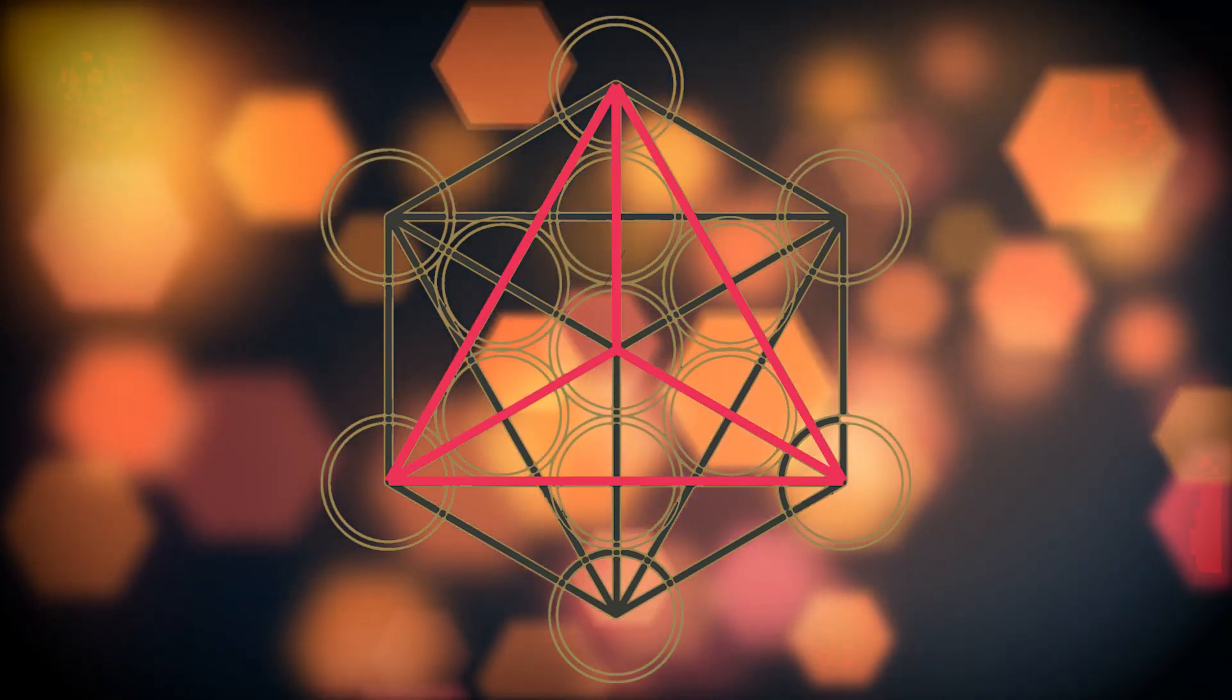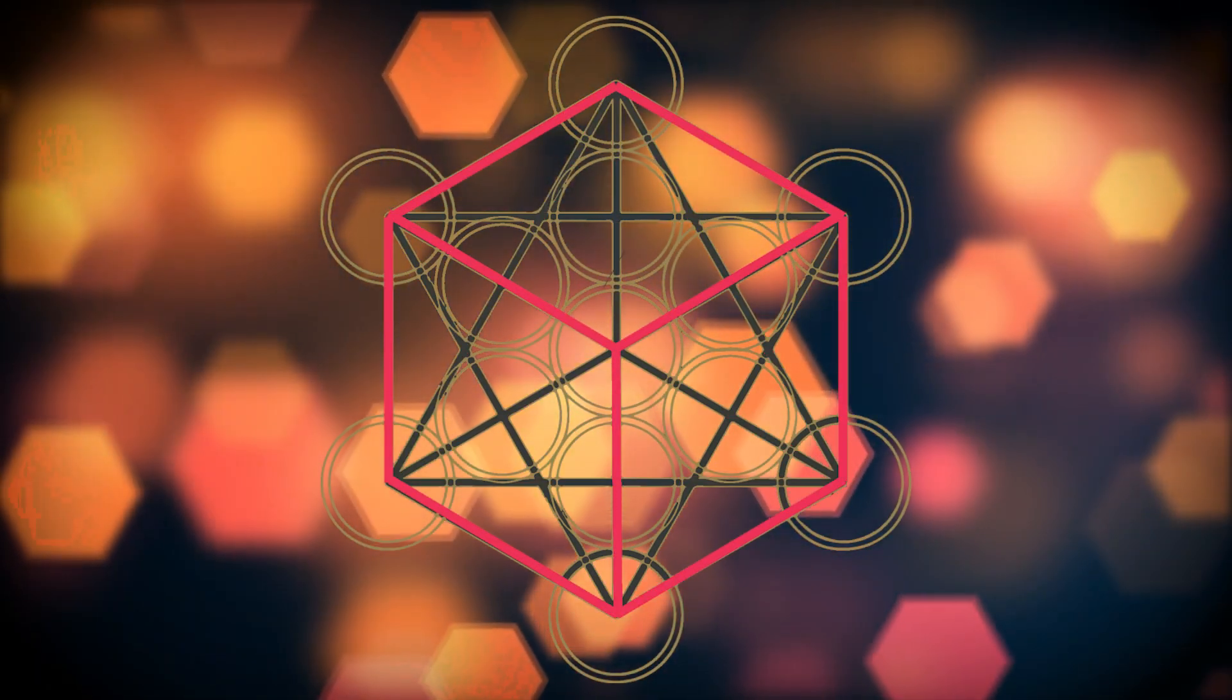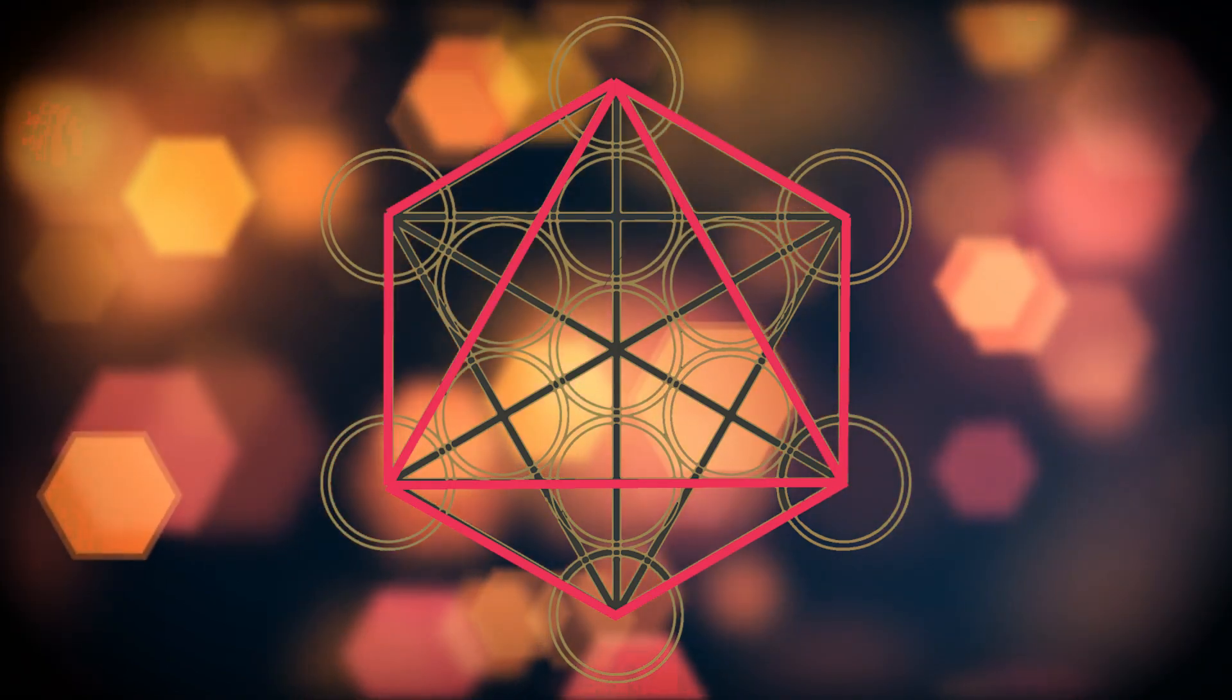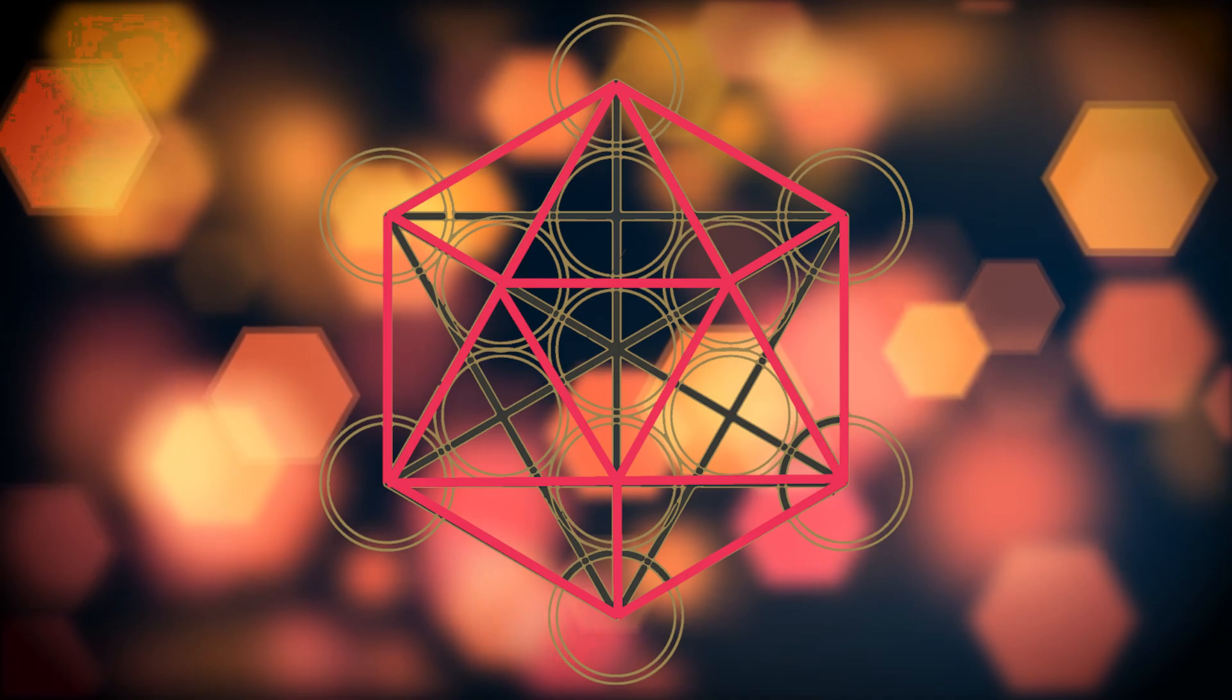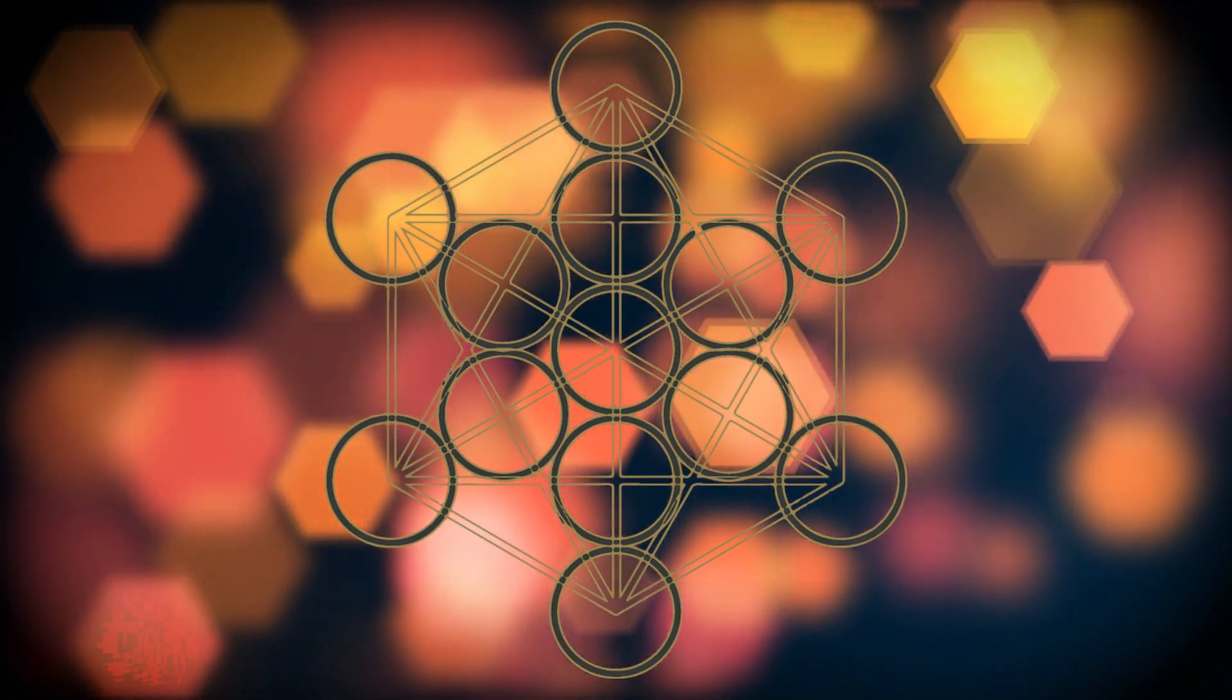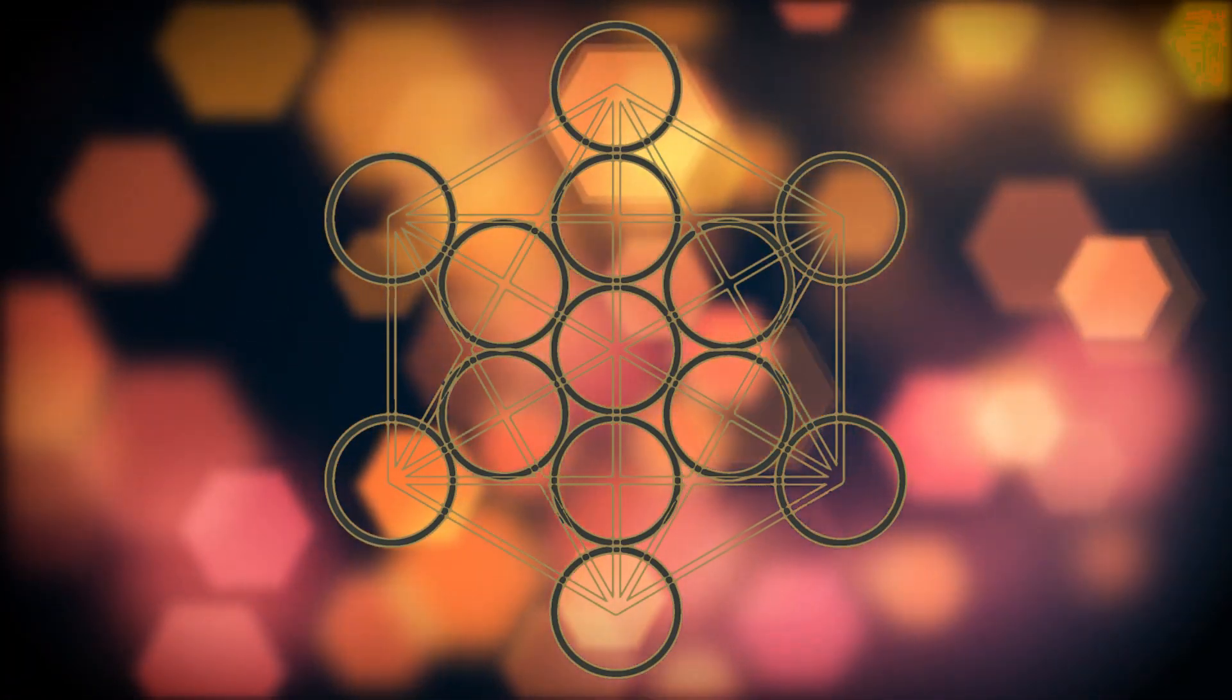Metatron's cube contains the five platonic solids: tetrahedron representing fire, cube representing earth, octahedron representing air, dodecahedron representing ether, and icosahedron representing water. These shapes are thought to represent the building blocks of life and the elements of the universe.